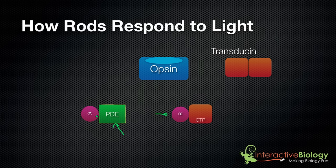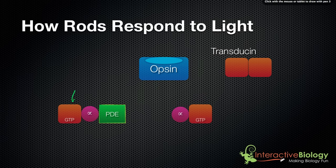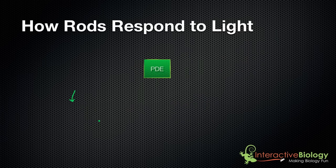In order to remove the second alpha subunit, this entire process has to happen again: light comes in, changing the retinol from cis to trans, the retinol leaves, opsin comes over and catalyzes the reaction to produce another GTP. Another activated subunit of the transducin molecule comes and removes the second alpha subunit from the phosphodiesterase. And now we have exactly what we wanted.